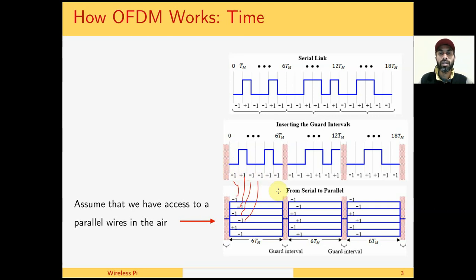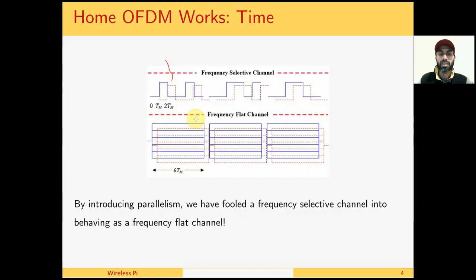We said that the symbol length has increased. Has the symbol rate reduced? No, because we are still sending 6 symbols in parallel on independent parallel wires that do not interfere with each other. The effect is that by introducing parallelism, we have fooled a frequency selective channel into behaving as a frequency flat channel. We call it frequency flat because this symbol in terms of multipath only interferes with itself and no inter-symbol interference happens with the next symbols.